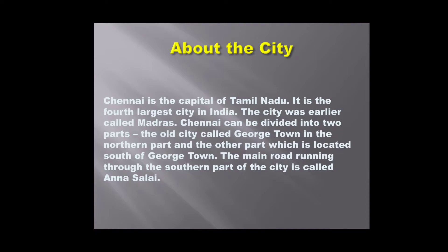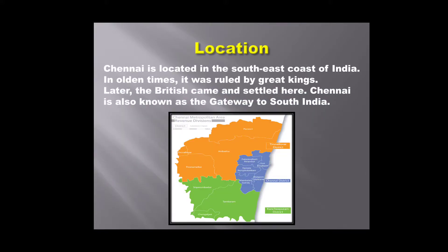South of Georgetown is located just below the northern part. The main road running through the southern part of the city is Annasalai. Chennai is located on the southeast coast of India. In olden times it was ruled by great kings, and later the British came and settled here. Chennai is also known as the gateway to south India.